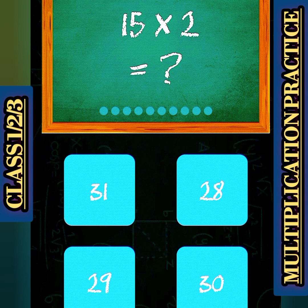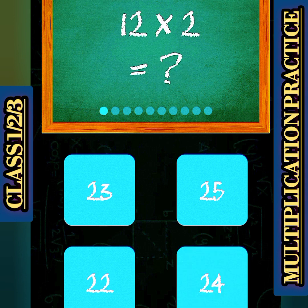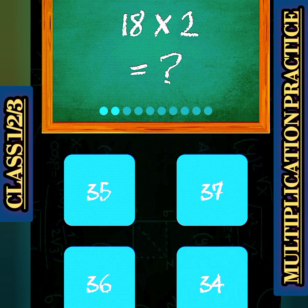Next है, 15 multiplied 2 — 30. 12 multiplied 2, kya hojaega? 24. 18 multiplied 2 — अगर आप 18 को 2 से multiply करते हैं, तो आपके पास क्या हैगा? 36.